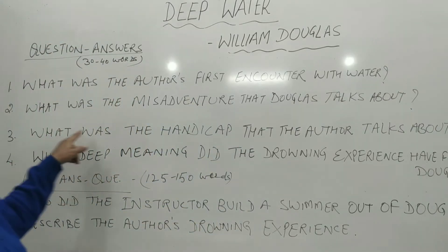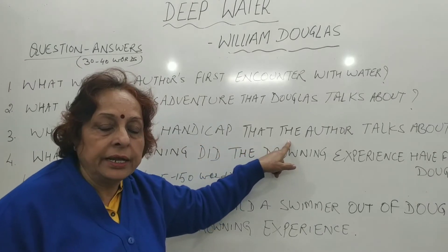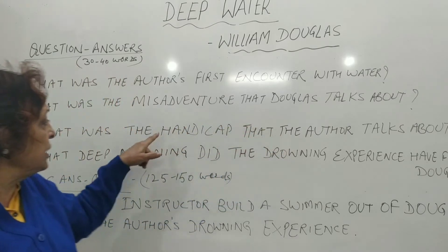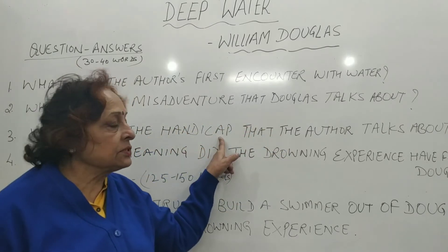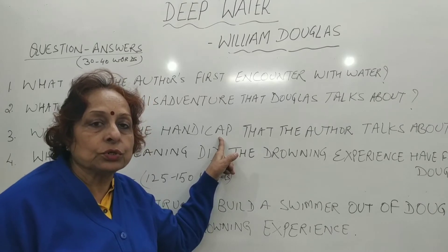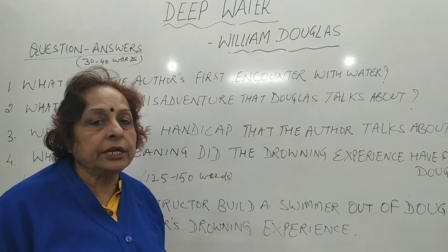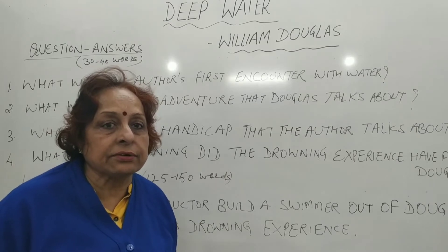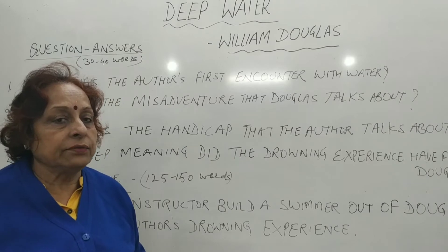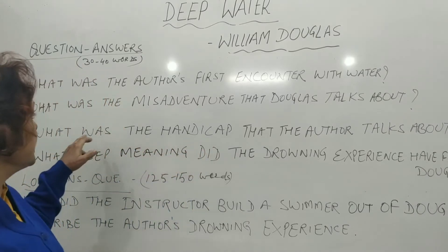Third question: what was the handicap that the author talks about? The handicap is his fear of water. Why does he call it his handicap? Because he was not able to enjoy water sports — he was not able to go for fishing, boating, canoeing, etc. He saw the other children doing it, so he felt he was missing it. That is why he calls it a handicap.